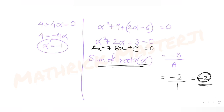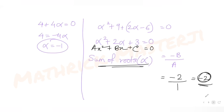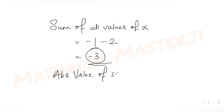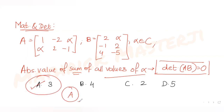Adding all the values of α: the first root was -1, and the quadratic equation tells us the sum of its two roots is -2, so the total sum of all values of α is -1 + (-2) = -3. The absolute value of -3 is 3. So the answer is 3, which matches option A. The answer choices were A:3, B:4, C:2, D:5, so option A is correct.